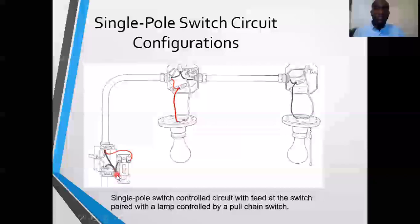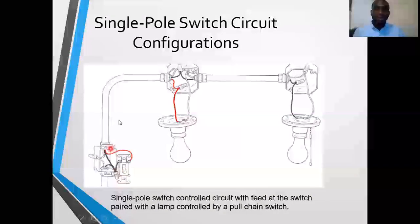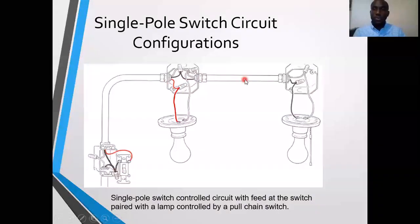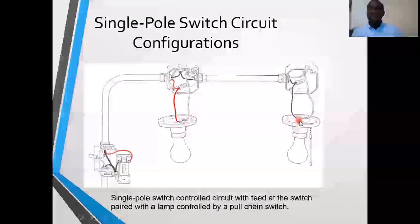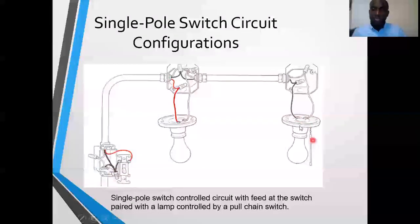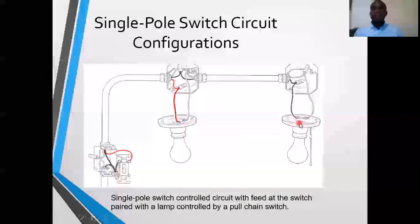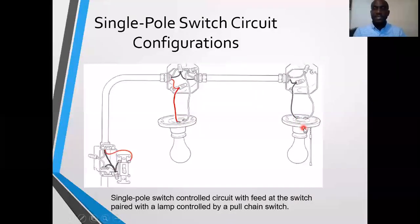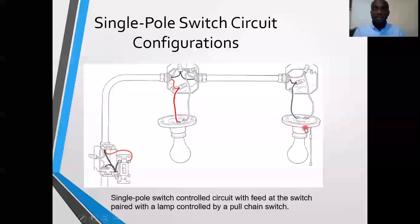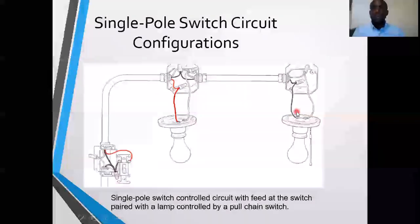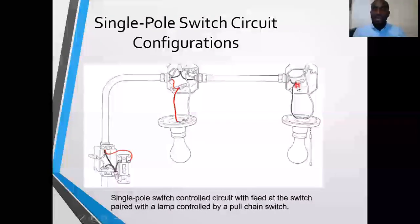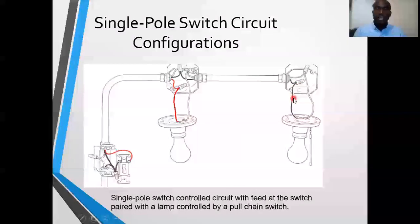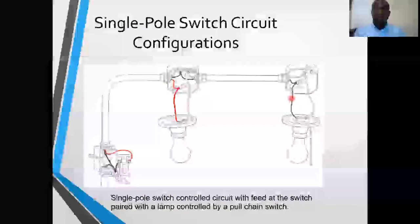Now this hot that we would have shared at the beginning, we send it all the way through and connect it to the brass terminal of the lamp that is serviced by the pull chain switch. It is very important for you to understand that when a lamp or device has its switch attached directly to it, you will send a black directly to it and not a switch feed red.